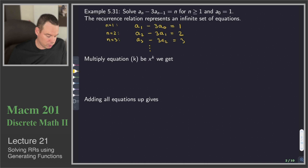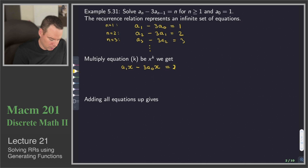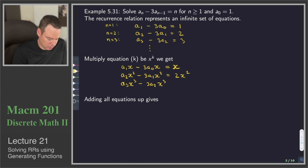What we're going to do is, for each of these equations — for the kth equation — we multiply by x to the k. So we take our first equation, a_1 minus 3a_0 equals 1, and multiply through by x. We take our second equation, a_2 minus 3a_1 equals 2, and multiply by x squared. We take our third equation and multiply by x cubed, and do that for all infinitely many equations.